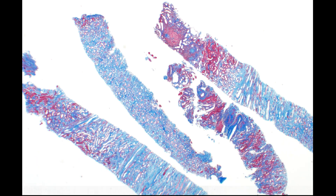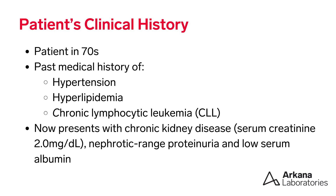Tell me more about this case. The patient is in her 70s with a history of hypertension, hyperlipidemia, and chronic lymphocytic leukemia, who presents with chronic kidney disease. Serum creatinine is 2.0 milligrams per dL, nephrotic range proteinuria, and low serum albumin.